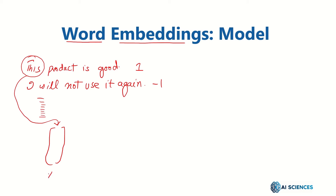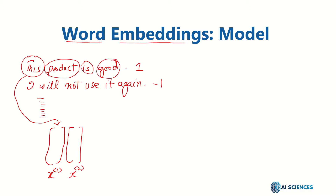Let me call that x1, which is the first word of this sentence. Then the second word has a different kind of embedding — let me call that x2, and similarly x3, and x4, and then we have the label y. So let me call that x1 for sentence one, and the corresponding label y1.